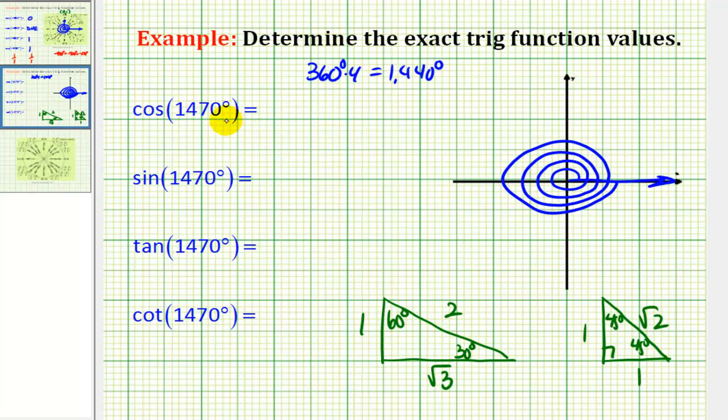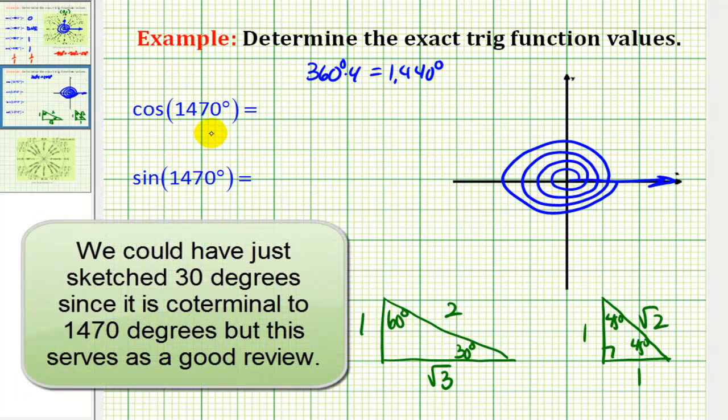And then to reach 1,470, we'll have to rotate an additional 30 degrees more. So from here to maybe about here. So this would be the terminal side of our angle.